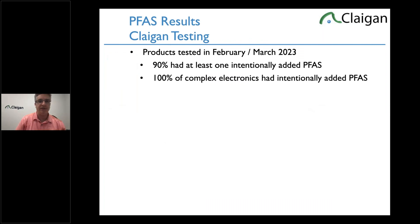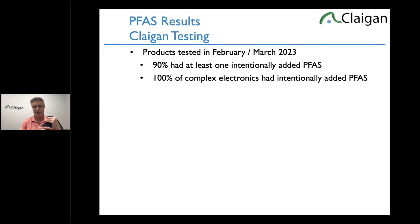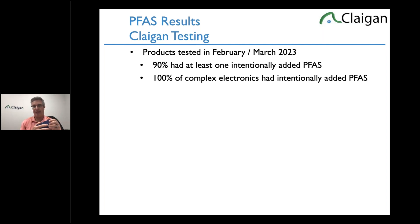Between February and March of this year, when we test a product — like a phone with many many parts — on average about 3% of individual parts we test have PFAS. But when it comes to the product level, 90% of the products we test have at least one PFAS component. For all complex electronics we've tested of any complexity, it's 100%. All complex electronics have PFAS in them.